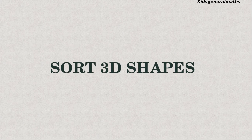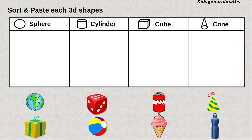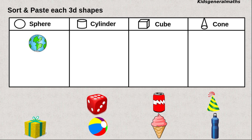Next we are going to sort the 3D shapes. Here they are given some 3D shapes. We are going to paste according to their shapes. First globe. It looks like what shape? Yes, it looks like a sphere. So we are going to paste in sphere. Next dice. Any guess? Yes, it looks like cube. So we are going to sort in cube.